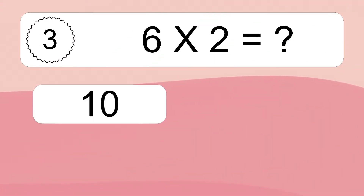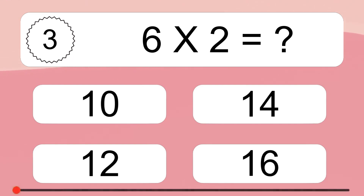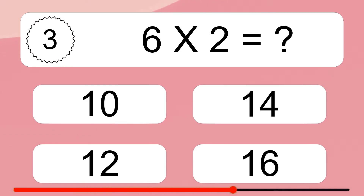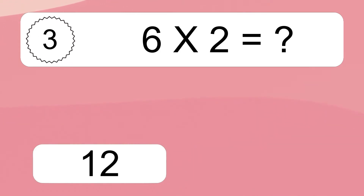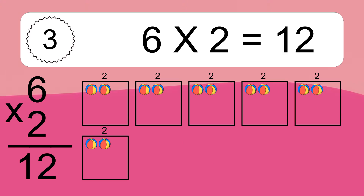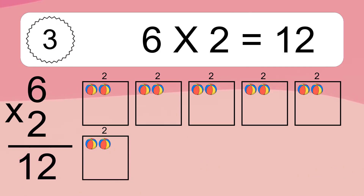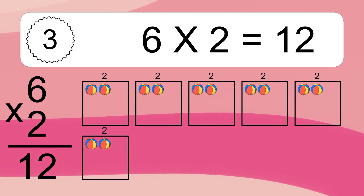Six times two equals what? Six times two equals 12. We have six boxes, and each box has two colorful balls inside. If you count all the balls in all the boxes together, you will have six times two balls. This equals 12 balls.